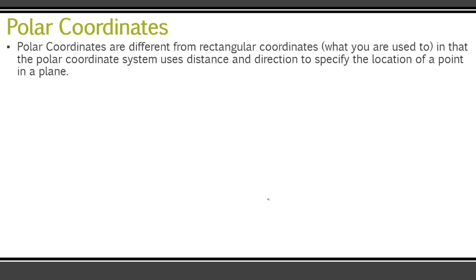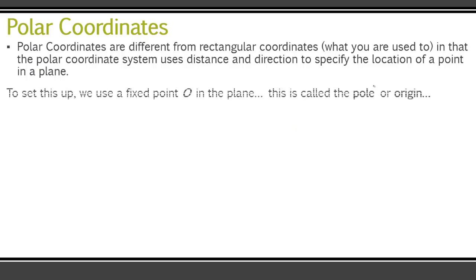So let's start with what polar coordinates are. Polar coordinates are different from rectangular coordinates — that's what you're used to, where they give you the x and the y on your graph. The polar coordinate system uses distance and direction to specify the location of a point in the plane. To set this up, we use a fixed point O, and this point is called the pole, or the origin. This is just terminology so that you know we're talking about the polar origin.